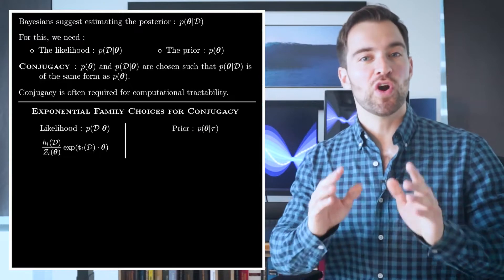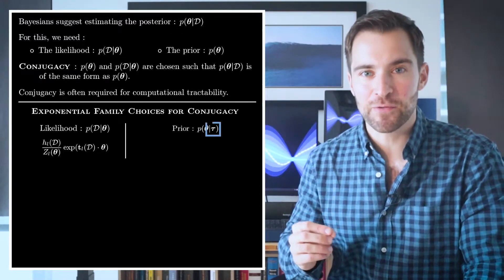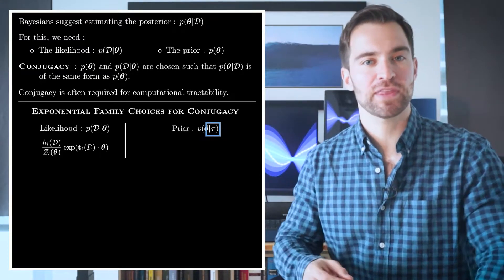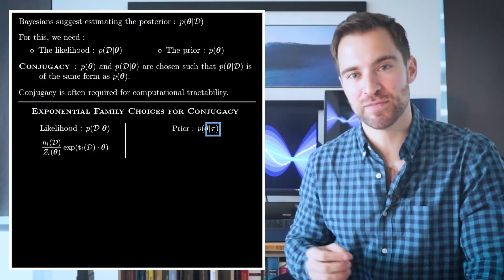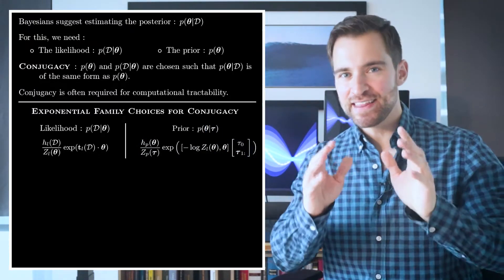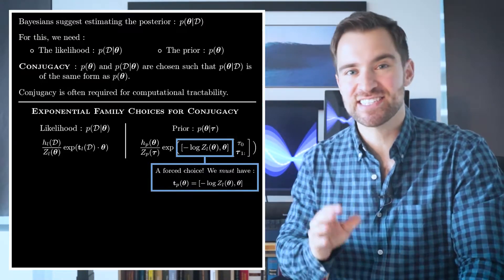Now, for the prior, we are also using the exponential family, which means we need to pick a fresh vector τ. Here, τ is a parameter dictating the distribution over θ. To differentiate the two, we say τ is a hyperparameter. With that, our prior needs to look like this.